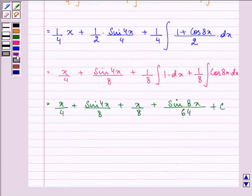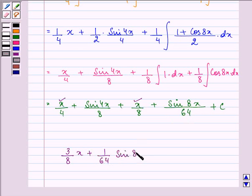On rearranging, we have the answer as, now here, x by 4 plus x by 8 is equal to 3 by 8x plus 1 by 64 sin 8x plus 1 by 8 sin 4x plus c.